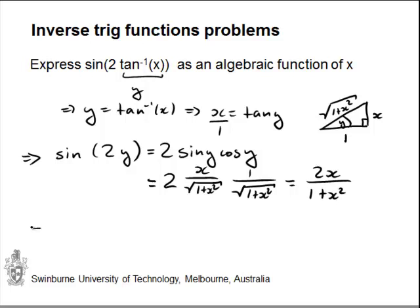And there's our algebraic expression for sine of 2 times the inverse tan of x. That's simply 2x over 1 plus x squared.